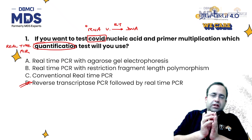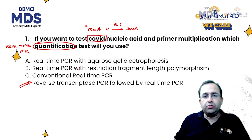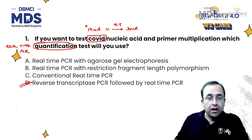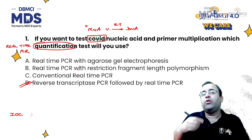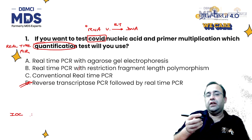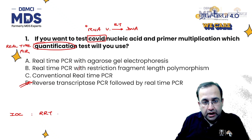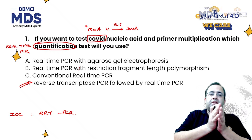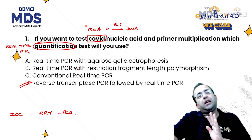When you get such a question, do not directly jump to real-time PCR. That is why the investigation of choice for COVID-19 is PCR — specifically RRT-PCR, that is real-time reverse transcriptase PCR. We first use reverse transcriptase followed by real-time PCR.